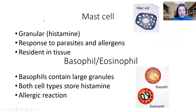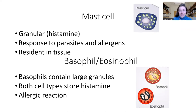Mast cells are granular, they respond to parasites and allergens, and they typically reside in tissue. This is why if you have a severe food allergen, you have that immediate reaction — because they just live in the mucosa of your mouth. Or if you have a bad allergic reaction to cats, they're living in your sinuses. There are also basophils and eosinophils, and they all store histamine and all participate in some degree to the allergic reaction.